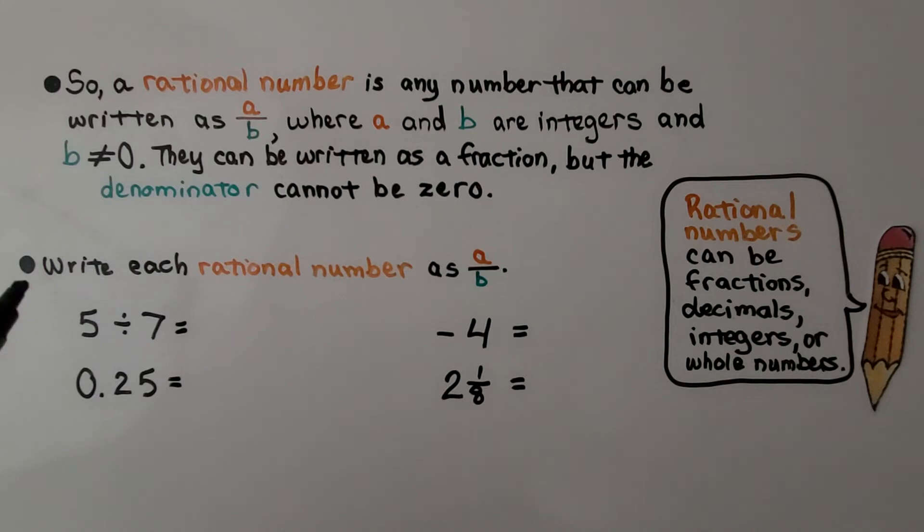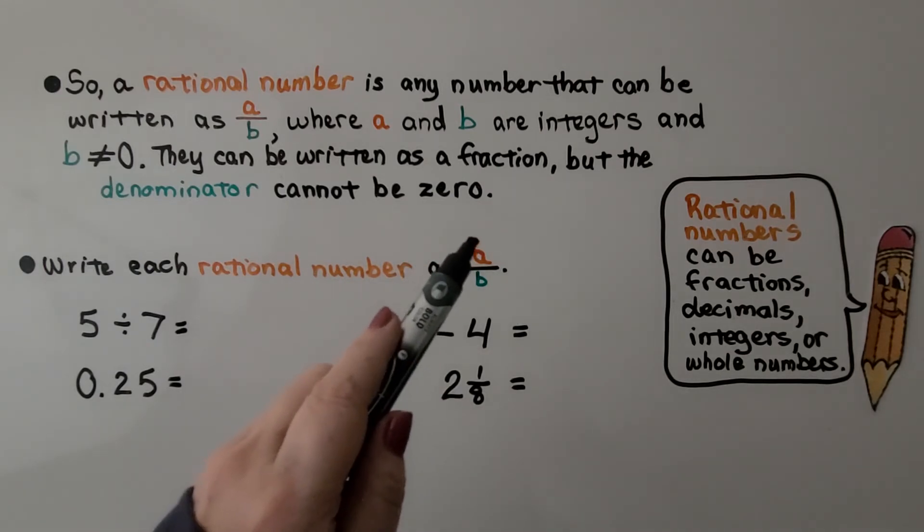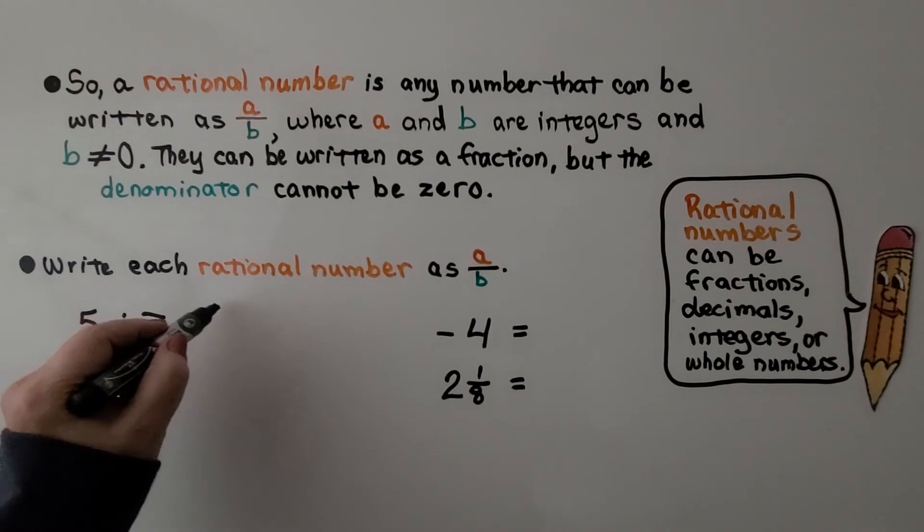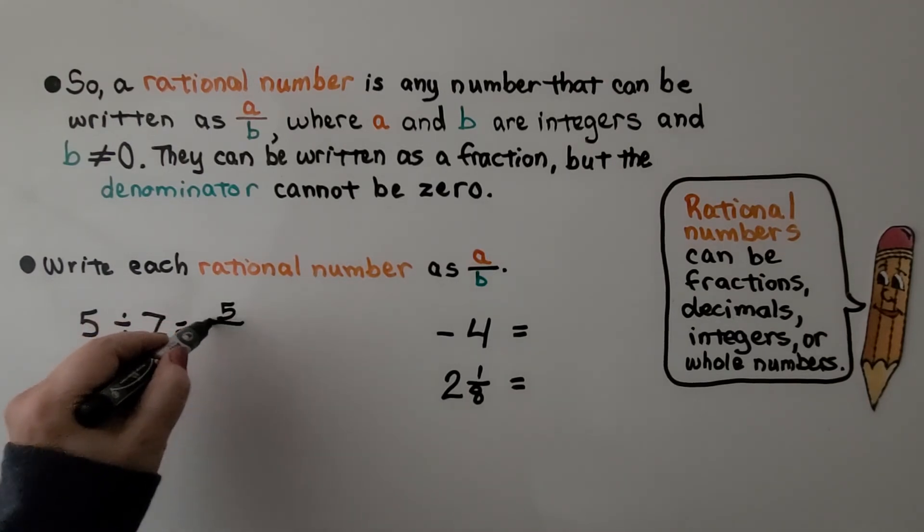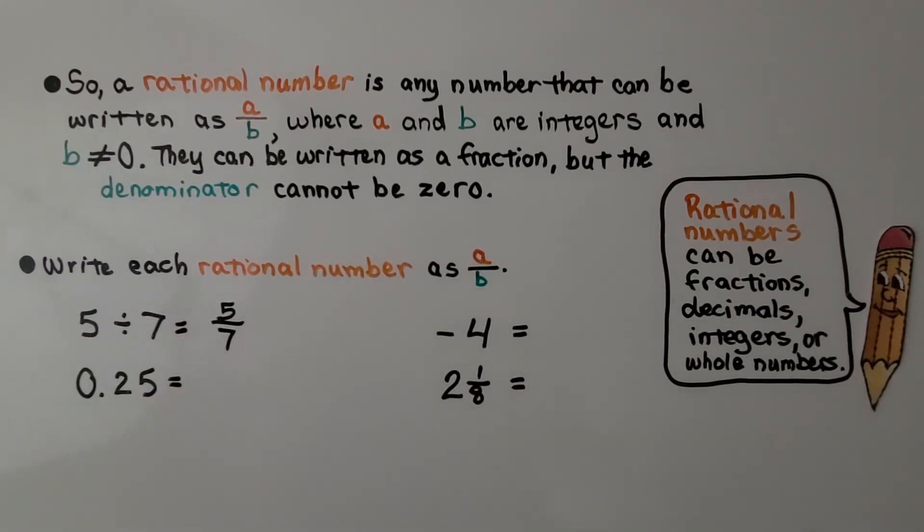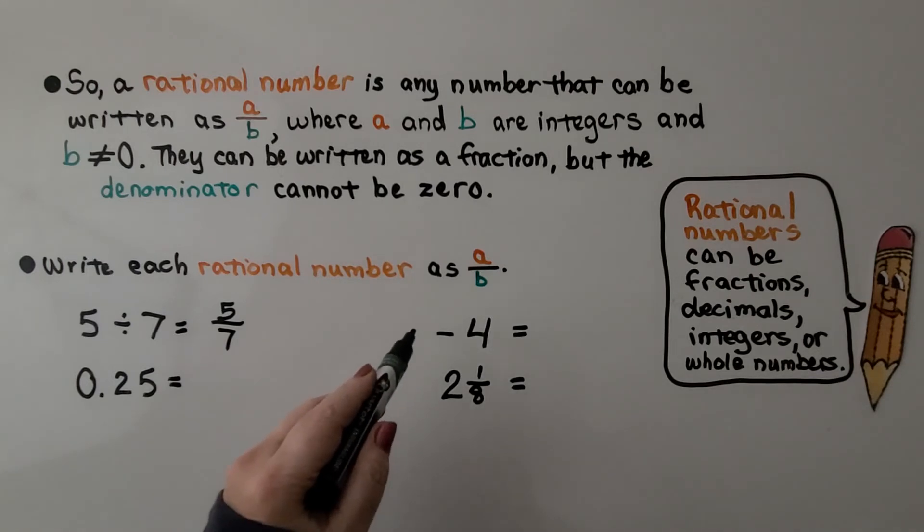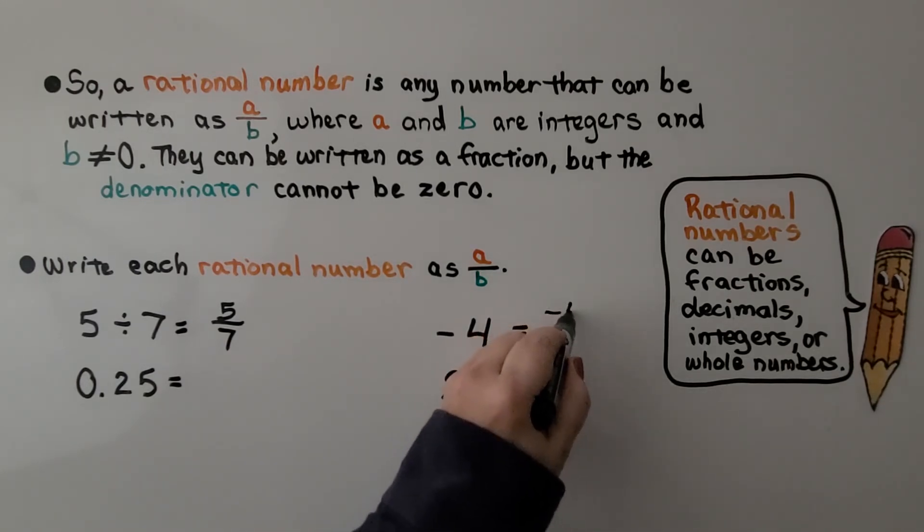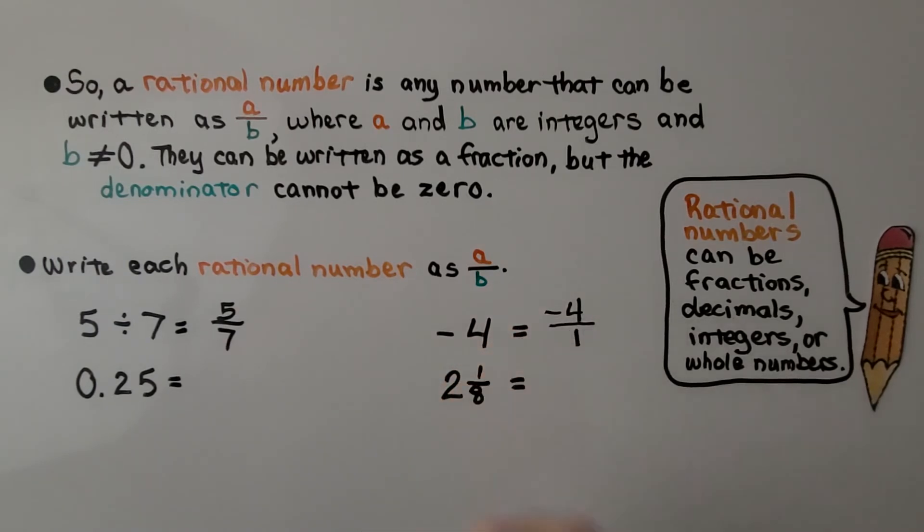It's telling us to write each rational number as a over b. We have 5 divided by 7. If you remember our 10 fifths, this would be 5 sevenths. Here we have a negative 4. We can just write it over a 1. We have negative 4. We remember the negative sign. We write it over a 1.